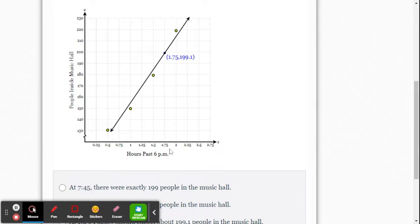So they're making a prediction at 1.75 hours after 6 o'clock, so that'd be 7:45. At 7:45 p.m., you expect to have about 199.1 people in the hall. And the point one's the giveaway. This is a prediction tool, because you can't have a partial person.